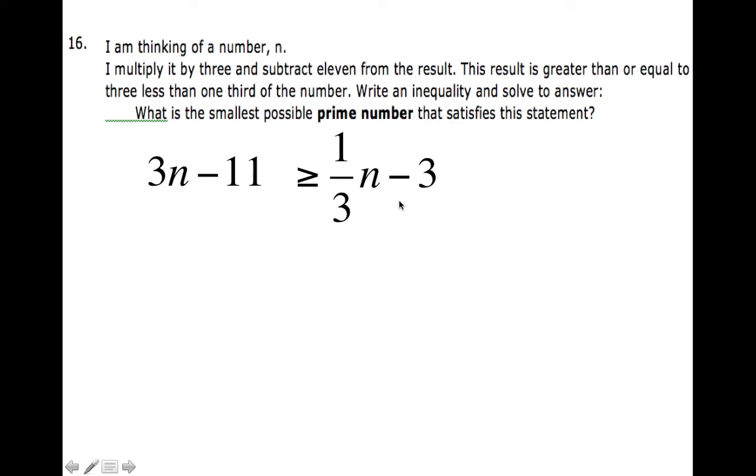Alright, so there it is. Now I'm going to multiply everything by 3 in order to get rid of this 3. So this becomes 9n, this by 3 is going to be negative 33, that's going to cancel, this becomes negative 9. So everything's been multiplied by 3.